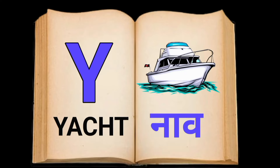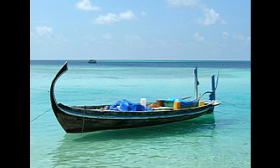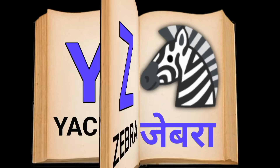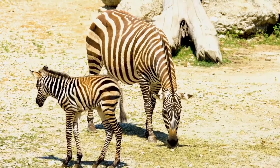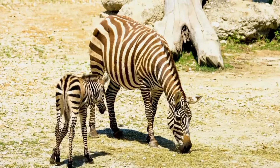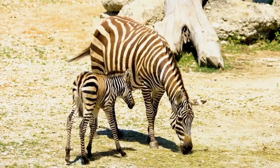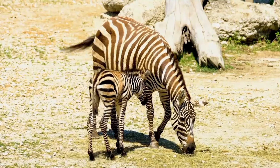Y for Yacht, Yacht means naav. Z for Zebra, Zebra means zebra.